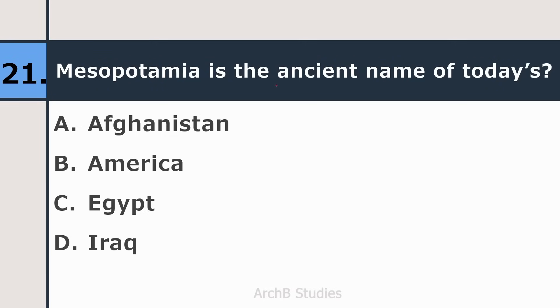Twenty-first question: Mesopotamia is the ancient name of today's — Afghanistan, America, Egypt, or Iraq? The correct answer is Iraq.